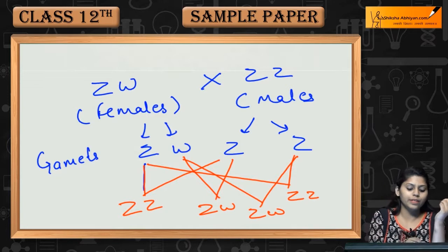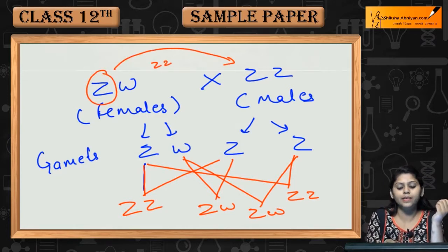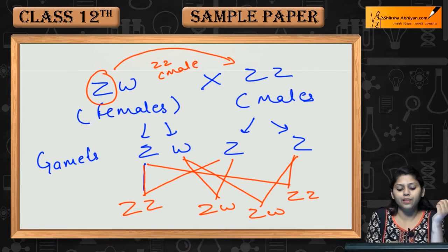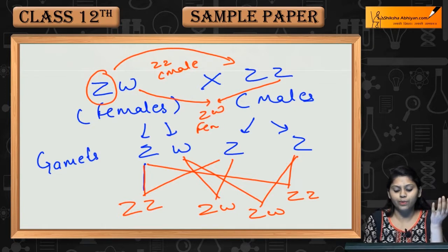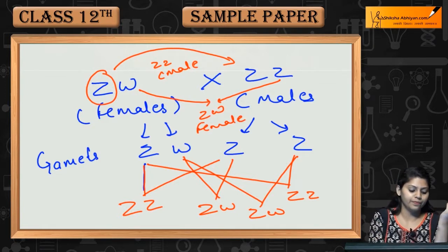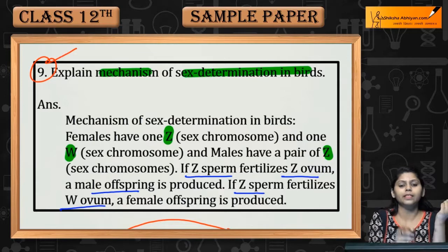So if Z cross karega Z ke saath then ZZ banega, which is male, and if W or Z cross karega then ZW female will be formed. This is question number 9.